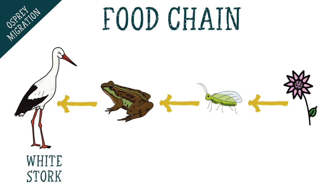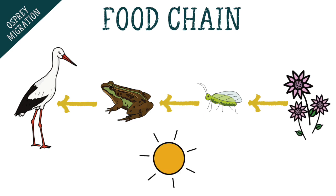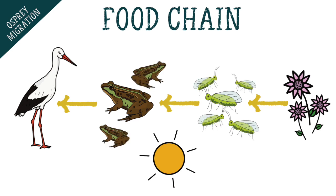For example, a white stork may feed on frogs, and the frogs depend on insects for their food, and the insects suck nectar from flowers. So in the warm months when plants spring into life, they influence the rest of the food chain, often in turn making food more widely available for the predator at the top of the food chain.